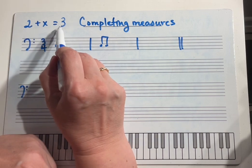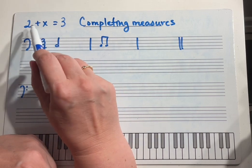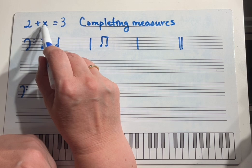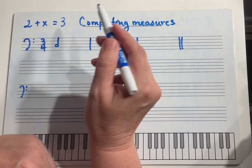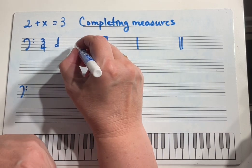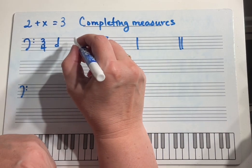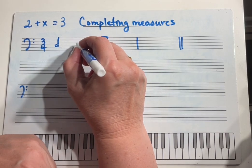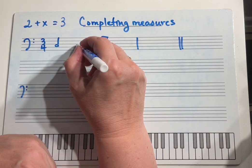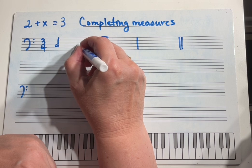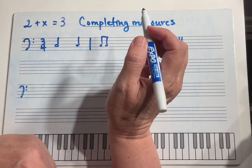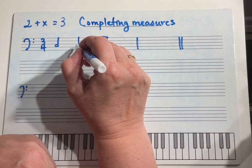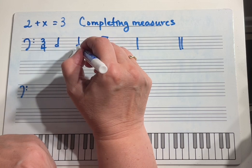Now when you're looking at the numbers, it's easy — you know x is one. That will complete your equation. And so from your knowledge of note values, this is easy as well. A quarter note gets one beat, so that completes this measure.